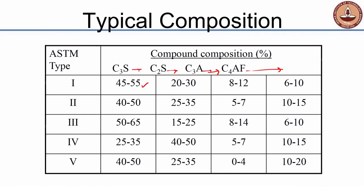Type 2, moderately sulphate resistant and moderate heat of hydration, has a lower C3S content and a lower C3A content compared to Type 1. When you lower C3S, C2S goes up because generally the balance of aluminates and silicates are the same in every cement. If you lower C3A, then C4AF goes up.